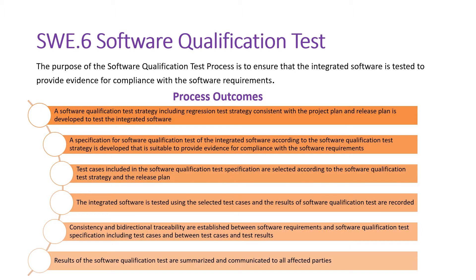The second outcome is a specification for software qualification testing. We have already developed the strategy, and then we need to develop the specification. The specification for software qualification testing of the integrated software is developed according to the software test strategy and is suitable to provide evidence for compliance with the software requirements. So two things are completed: strategy and specification.